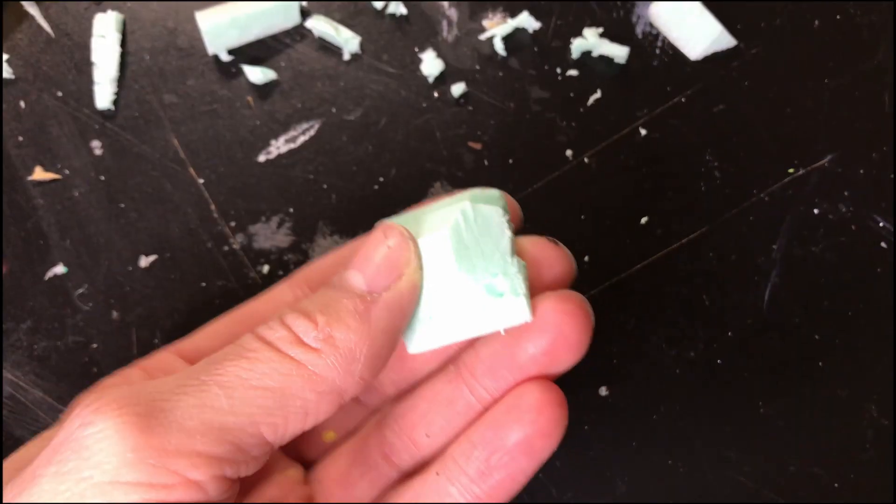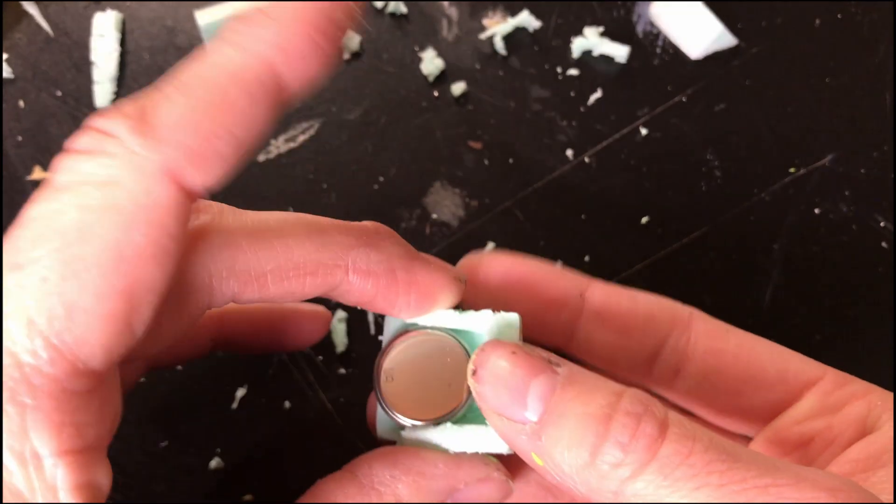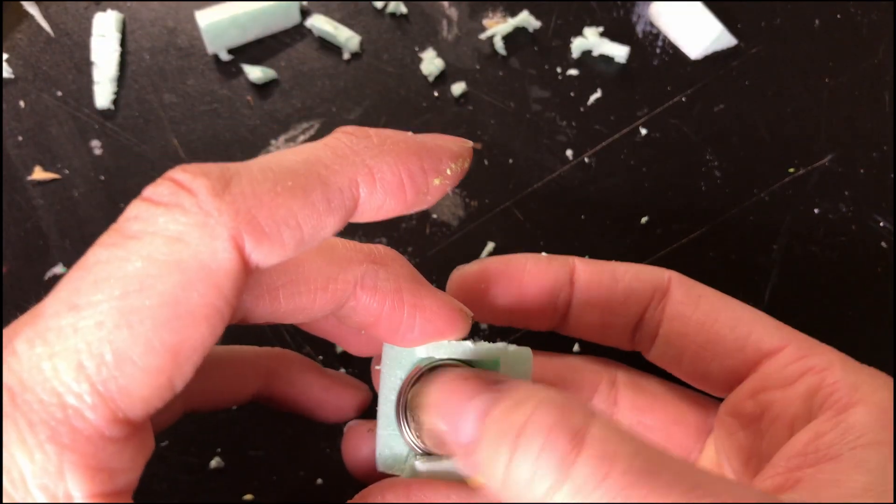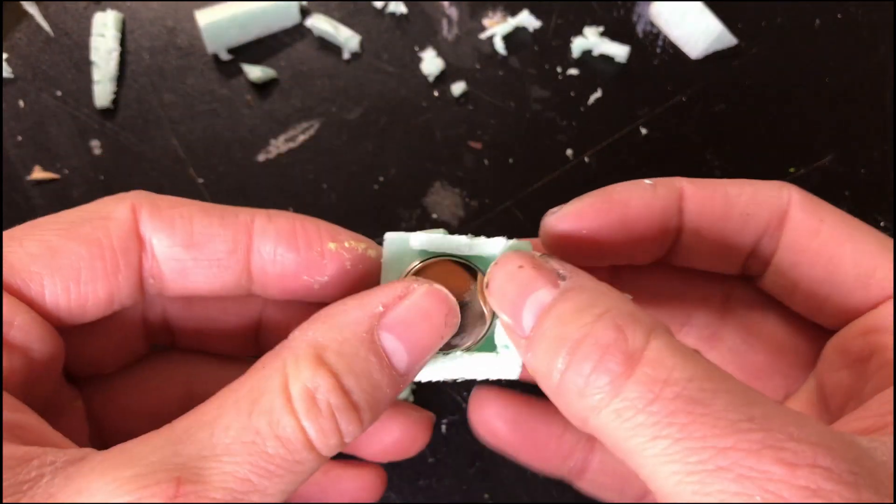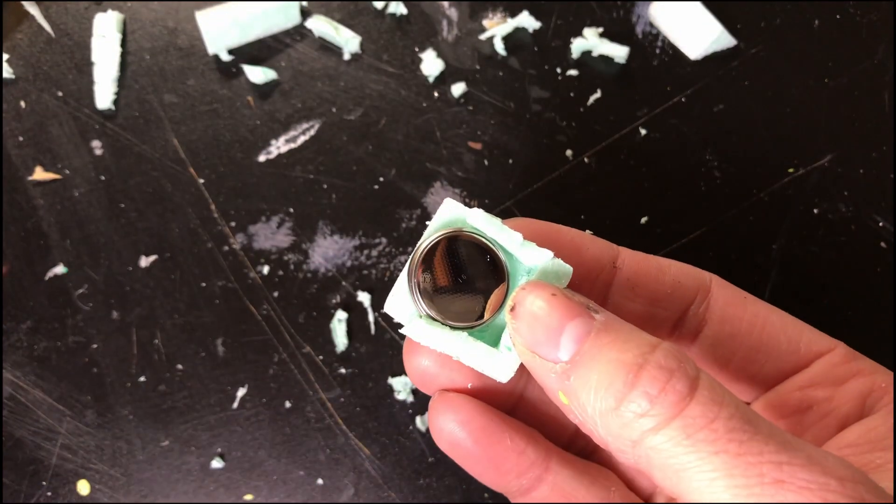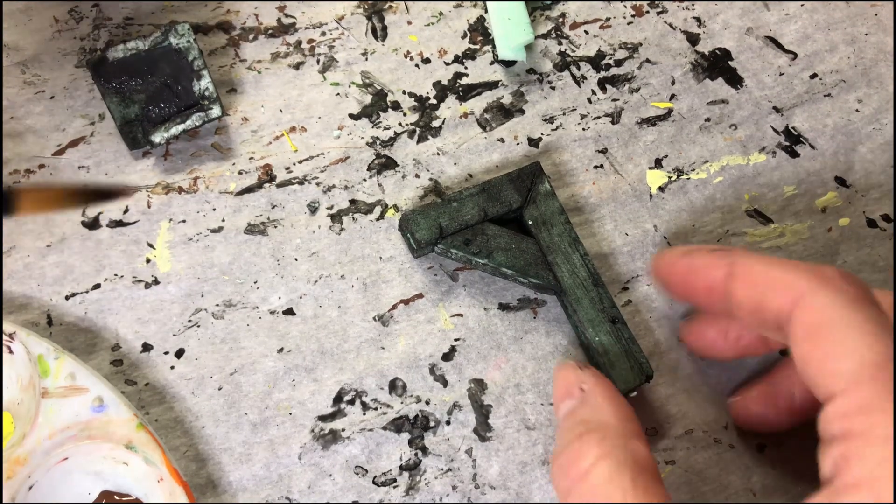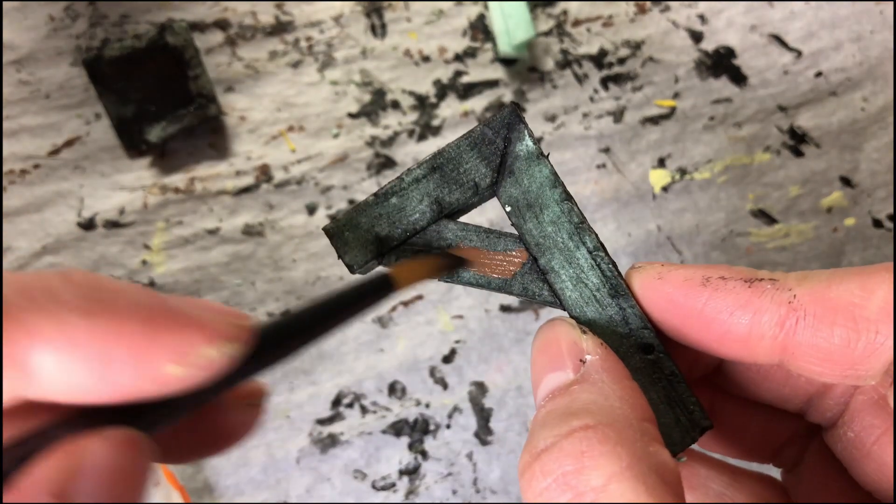And finally, I made a base to hold a 3-volt coin battery. Then I painted the lamp post brown.